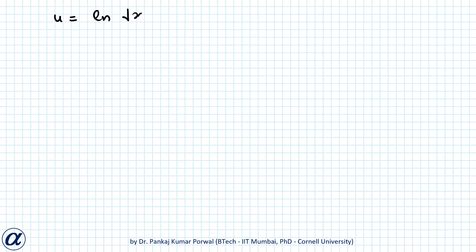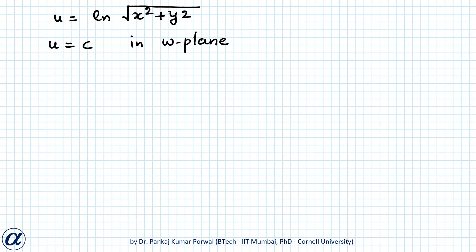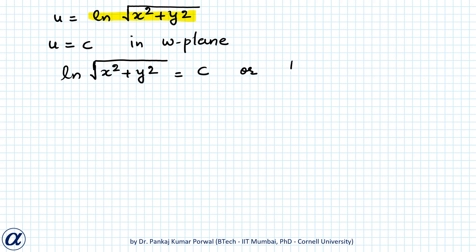So here u equals to ln(√(x²+y²)). We are given lines u equals to c in the w plane. Because u equals to ln(√(x²+y²)), I will have ln(√(x²+y²)) equals to c, which gives √(x²+y²) equals to e^c. Squaring both sides gives x²+y² equals to e^(2c).